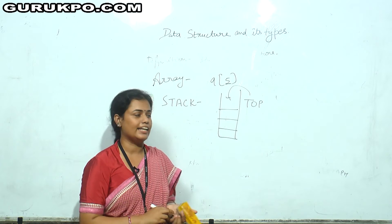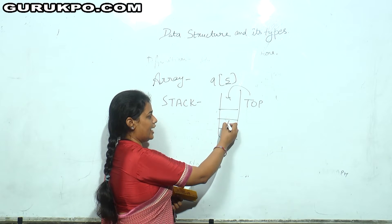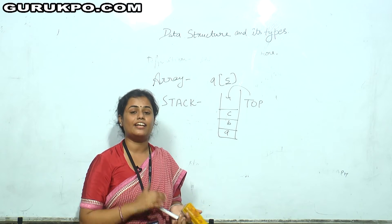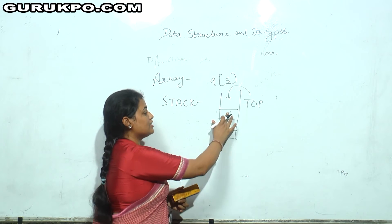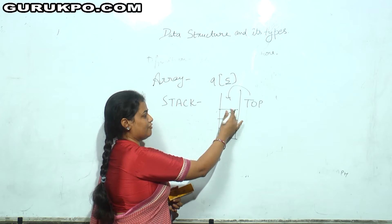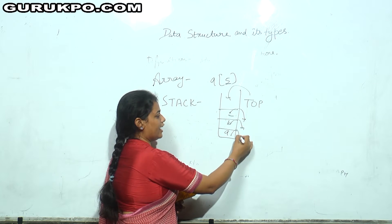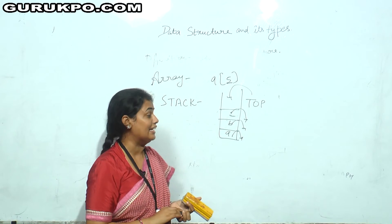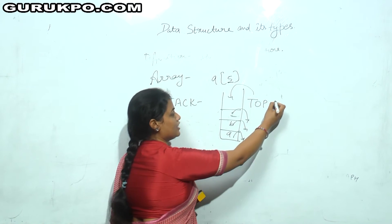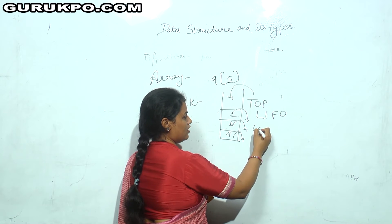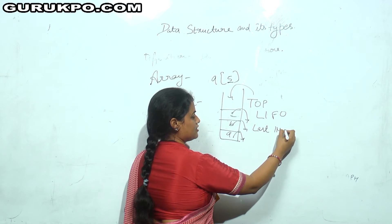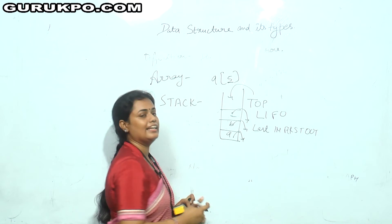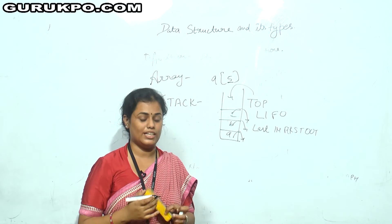Suppose you are inserting data like A, B, C — then C will come at the top of the stack. If you have to delete, you can only delete the data which came in last. You will delete C first, then B, then A. The element inserted last will be deleted first. That is why it is called LIFO — last in, first out. The element which is inserted last will be deleted first. This is called stack.